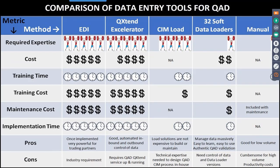Alex, Denise, and I put together a little comparison chart. There are lots of ways to get data into QAD: EDI, the accelerator, SIM loads, Alex has a whole bunch of data loaders available, and then you have menus. We tried to compare the expertise required — EDI and QXtend take a lot of knowledge. SIM load you've got to know what you're doing. If you want to do it manually, just go ahead. Some take training time, some costs, maintenance costs, and implementation time — we put in some pros and cons so you can take a look at that.